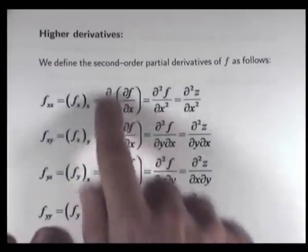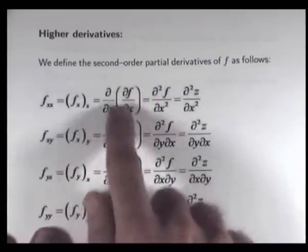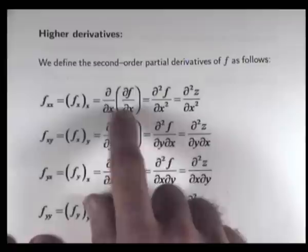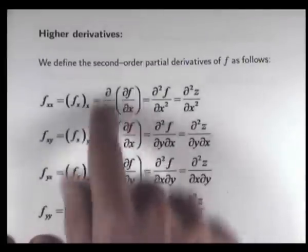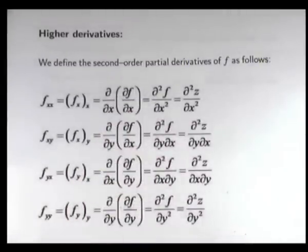So you can see here, by this we mean, we take df/dx and then we take the partial derivative of that again. So that's basically just a derivative of a derivative.